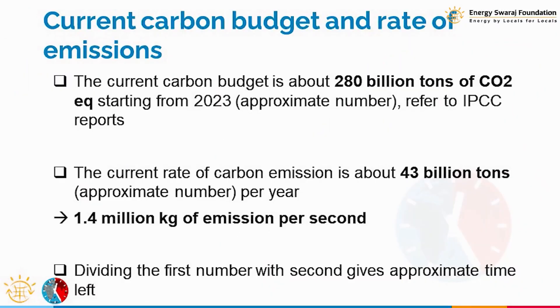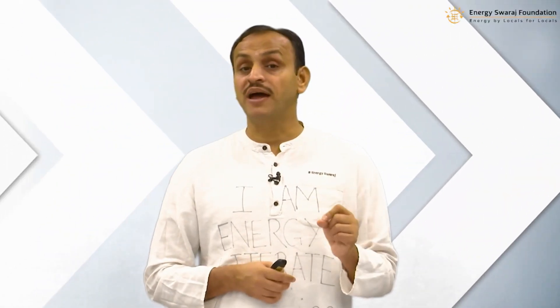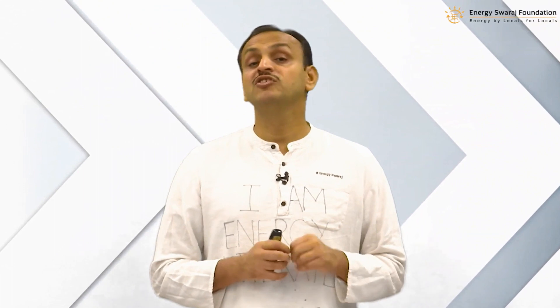So what are the two numbers right now? The first number — the carbon budget as of the beginning of 2023 — is about 280 billion tons for 1.5 degrees centigrade. For 2 degrees centigrade it is much higher, about 1020 to 1030 billion tons. Again, these are taken from the IPCC — Intergovernmental Panel on Climate Change — report of last year, one of the most authentic and credible reports.